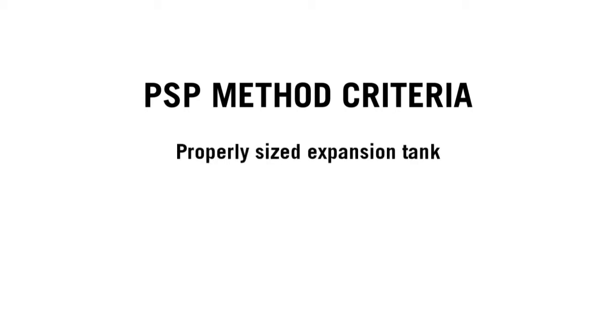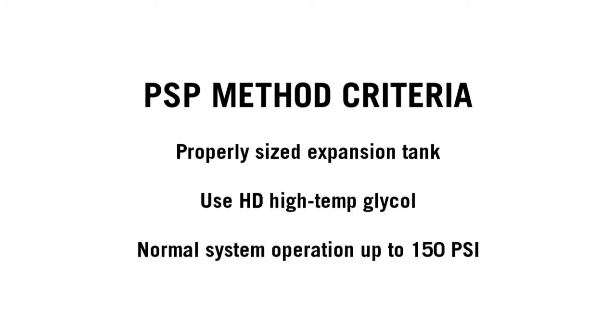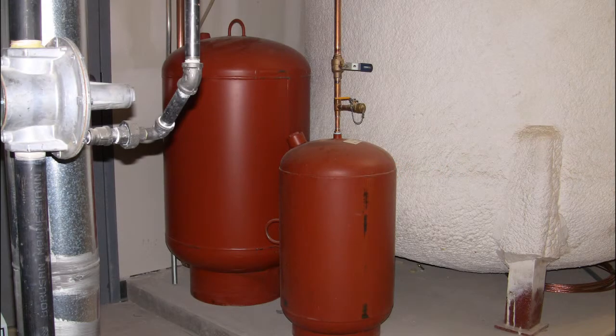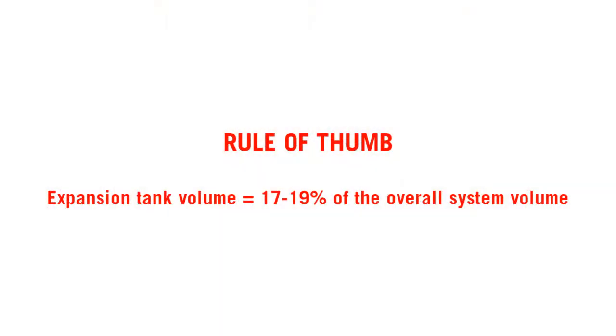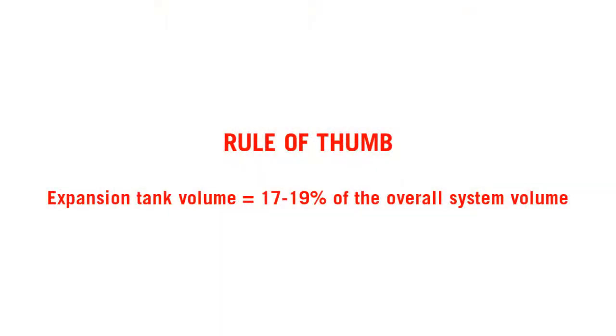To properly use the PSP method as a form of stagnation protection, you must properly size your expansion tank to allow for controlled system pressure behavior, use HD high-temperature glycol, and allow normal system operation at pressures up to 150 PSI. Expansion tanks are sized according to the total volume of fluid within the solar loop. A typical rule of thumb in residential systems is to use 17 to 19 percent of total system volume for your expansion tank volume.